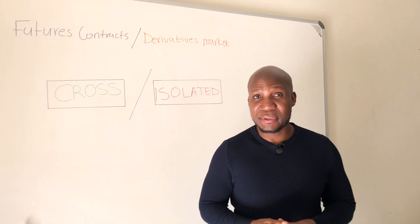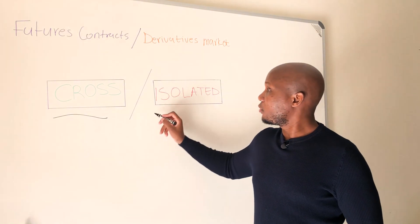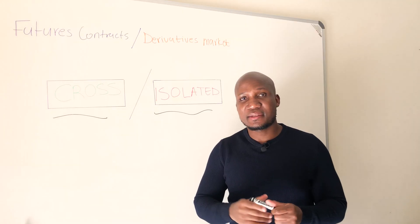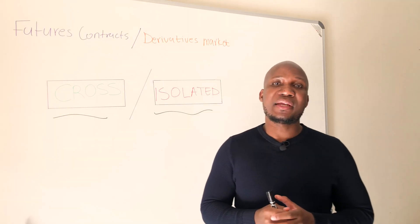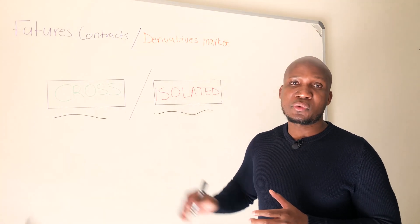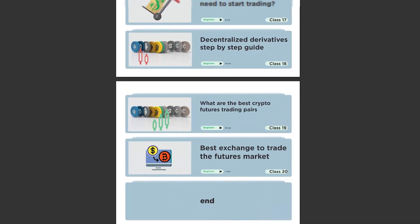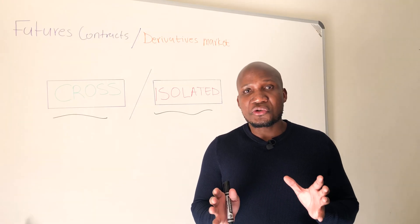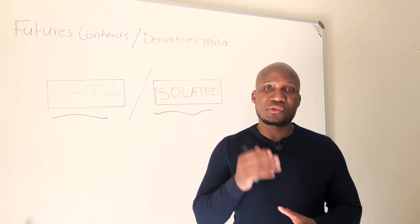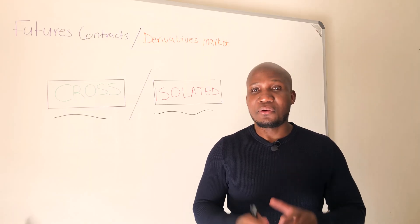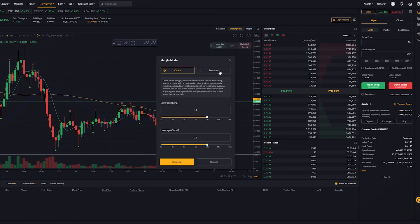Whenever you're trading the futures market you are presented with two options: you have to choose from either trading cross margin or isolated margin. If you're just getting started, knowing which one to use may be a little bit complicated, but in this class we're going to go in depth with understanding either of these two trading modes. This video is part four of our ultimate guide into trading the derivatives market. Let me share my screen and let's get started — go ahead and click on cross or isolated.